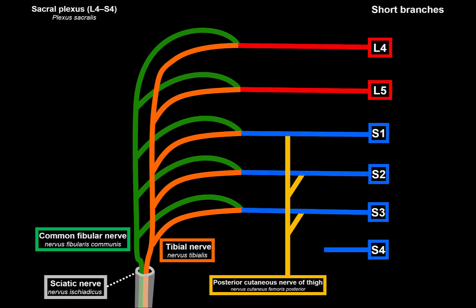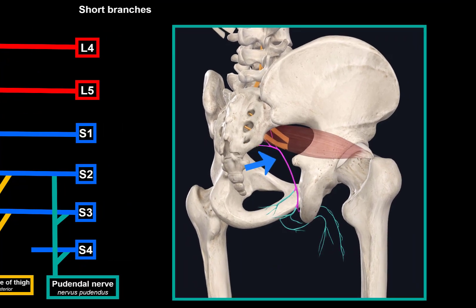Now for the short branches. The pudendal nerve comes from S2, picking up branches from S3 and S4. It runs through the infrapiriform foramen with the internal pudendal artery and veins, turns around the ischial spine into the lesser sciatic foramen, enters the ischiorectal fossa, passes through the pudendal canal, and reaches the external genital organs — terminating as the dorsal nerve of the penis or clitoris.